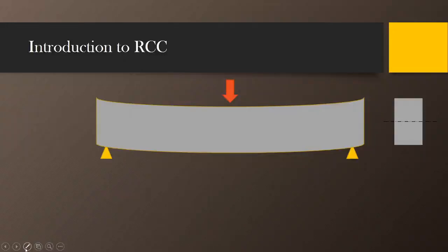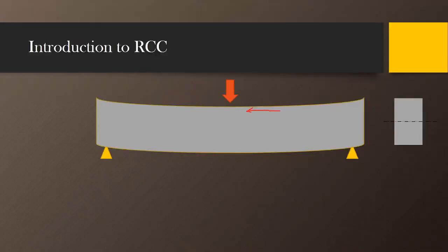As the beam deforms, the total cross-section is subjected to two types of stresses. As the beam is subjected to a downward external load and deforms in that shape, the top fibers of this beam are subjected to compressive stresses — the top fibers are coming together, so the top portion will be in compression.